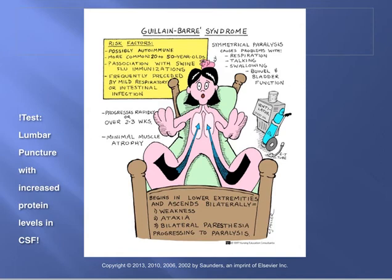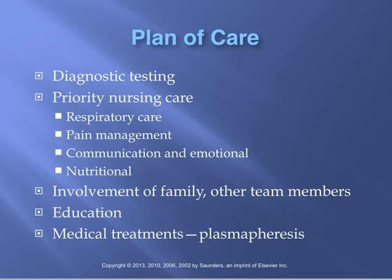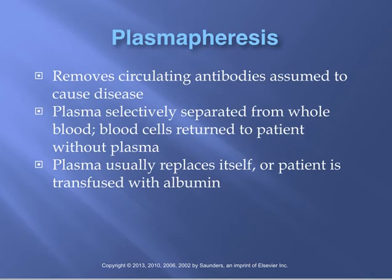A lumbar puncture is commonly performed for Guillain-Barré, and most commonly an increase in protein levels is found in the cerebral spinal fluid. Treatment includes plasmapheresis to remove antibodies, ventilation support, immunoglobulin, and an NG tube if dysphagia is present. Plasmapheresis is done like dialysis — the plasma is separated from whole blood, blood cells are returned without the plasma, and the plasma is replaced with something like albumin.